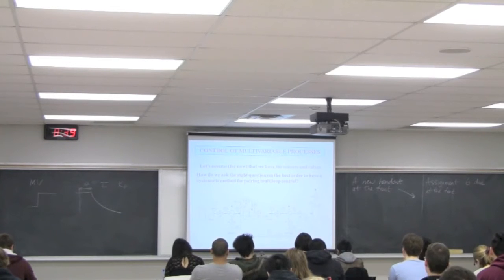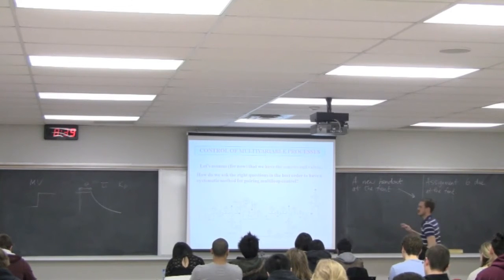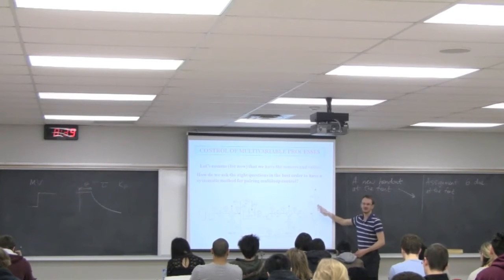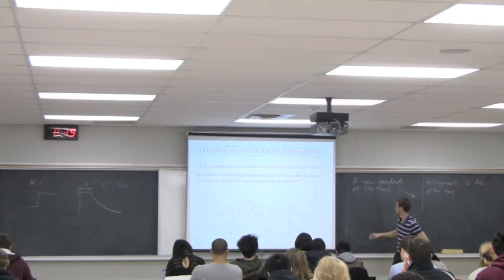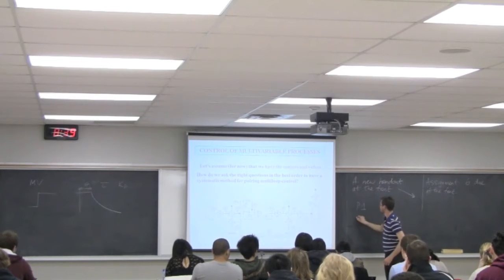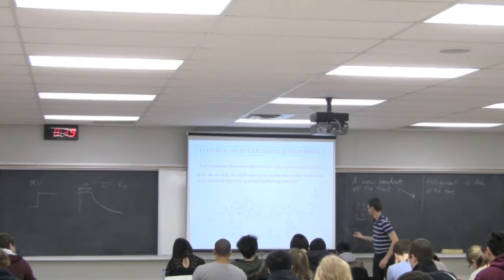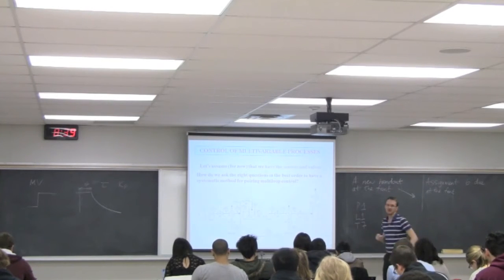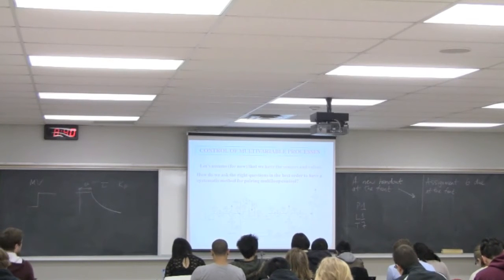A lot is going on in this flowsheet. Let's focus on what we control: level is important, pressure is important — you never want pressure in the flash vessel to exceed a certain limit or there could be an explosion. So P1, L1, and T7 are the three key controlled variables we'll focus on.